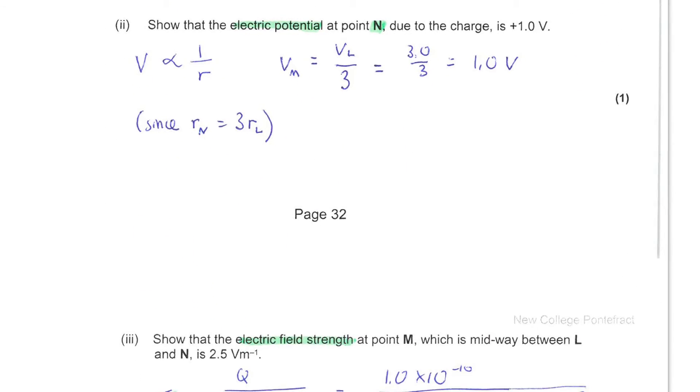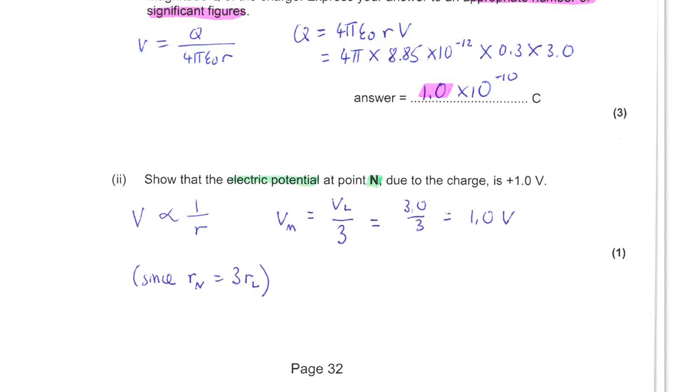You could use the same equation for potential here in a radial field. Take the value of Q, substitute that in and your new value of R but it's a more direct route to consider just that the potential is inversely proportional to the distance R.